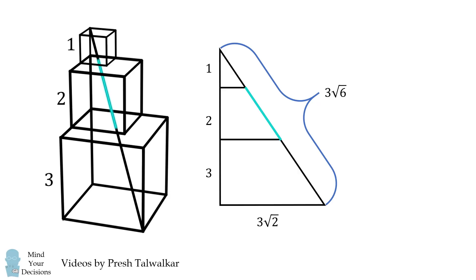Now, we have three similar right triangles. As such, the hypotenuse will be divided into a ratio of 1 to 2 to 3. Therefore, 3 times the square root of 6 will be equal to x plus 2x plus 3x, which means it will be equal to 6x.